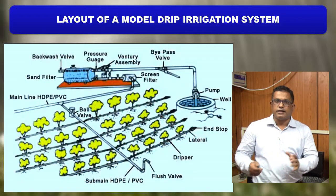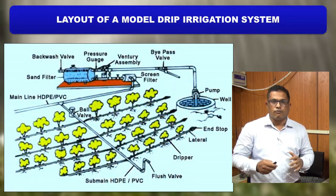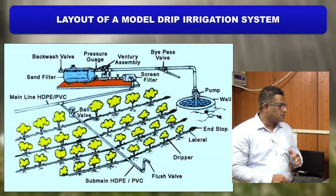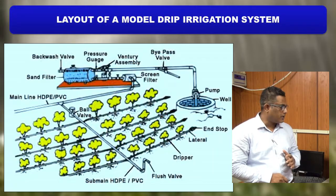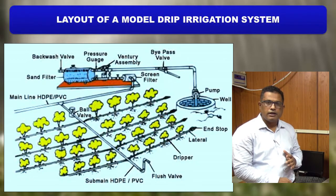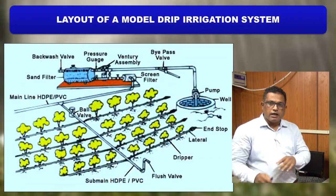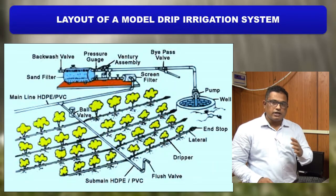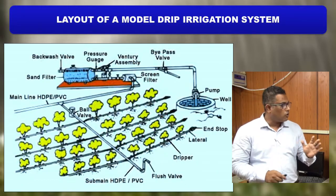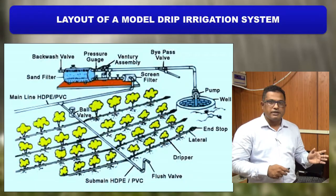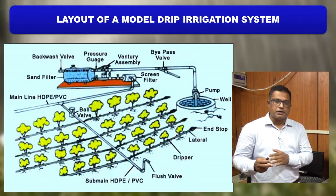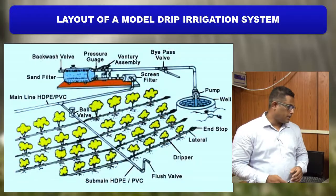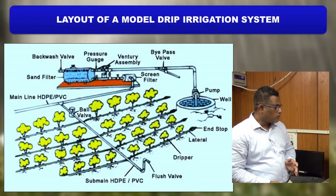One chapter we could not complete in sprinkler irrigation because it requires field work is the calculation of uniformity coefficient — how uniformly water is applied everywhere. The design discharge may be 4 liters per hour, but one dripper may give 4.2 and another 3.6, showing a difference in uniformity. A variation of 10 percent in discharge is considered acceptable. If discharge variation is more than 10 percent, the system has to be corrected to increase pressure or improve uniformity. A pressure drop of 20 percent and a discharge variation of 10 percent is allowable in both sprinkler and drip irrigation systems.